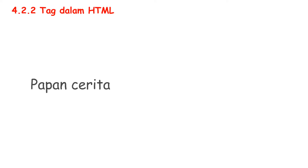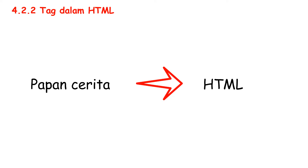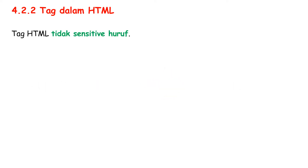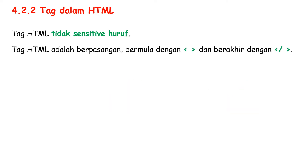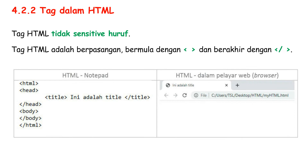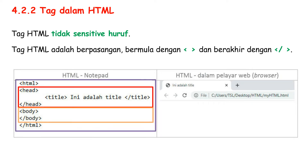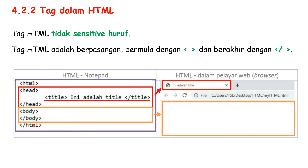After learning Papan Cerita, it is now the time for HTML. We use Papan Cerita and then code in HTML to create a Laman Sesawang. HTML texts are not case sensitive, which means both uppercase and lowercase letters are acceptable. HTML texts are paired, starting with an opening tag and ending with a closing tag. HTML code is just like a human — it has a head and a body. Inside the head you can put a title, which will show in the tab of a web browser, and the body contains all the content of the Laman Sesawang.